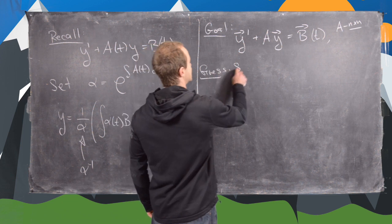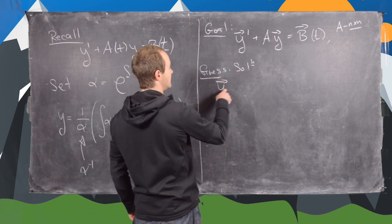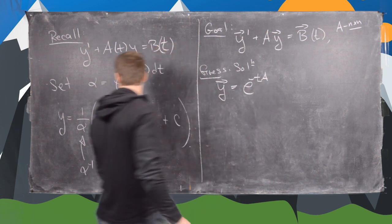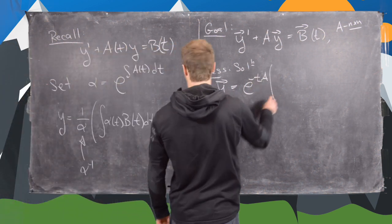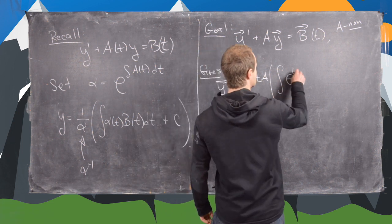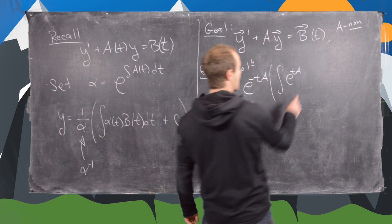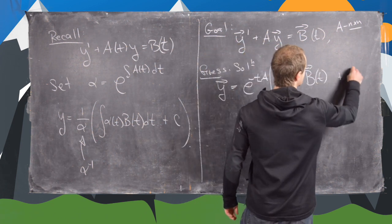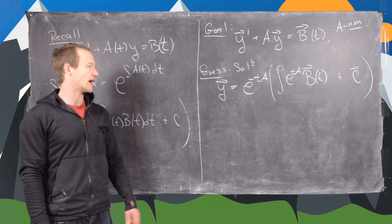Our guess is that our solution is y vector equals e to the minus tA — the matrix exponential — times the quantity: the antiderivative of e to the tA (again, that's the matrix exponential) times vector b of t, plus a constant vector c.